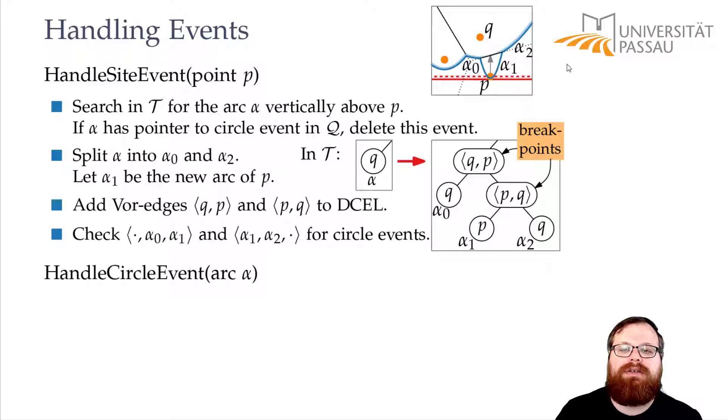And then we have to find new circle events. So we have to find where is the circle event for alpha 1, alpha 0 and this parabola to the left. So where do p, q and this point come together? And what is the circle event for alpha 1, alpha 2 and whatever parabola is here to the right? So where do these three points come together? Where is this point that has on its largest circle exactly these three on the boundary? In this example, there is none. But in general, there might be a new one.